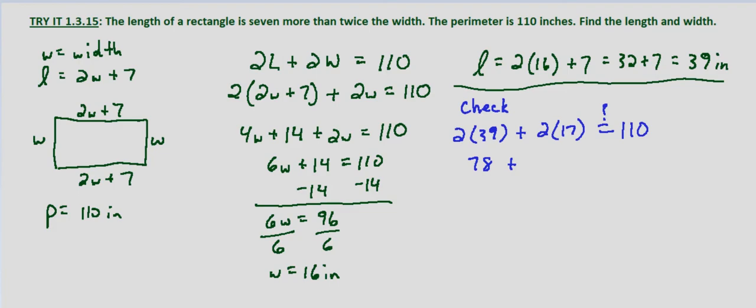I said the right number but I wrote the wrong one. Let me go ahead and fix that real quick. Our width is 16, not 17. So does that equal 110? 2 times 39 again is 78, plus 2 times 16 is 32.